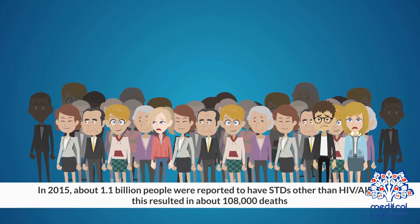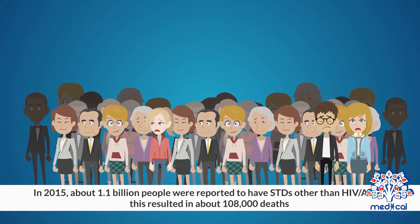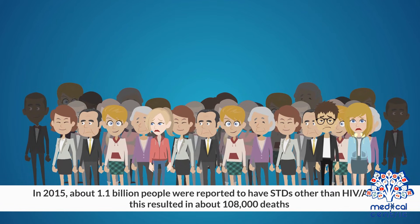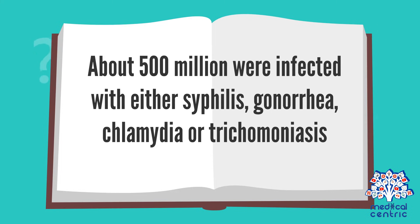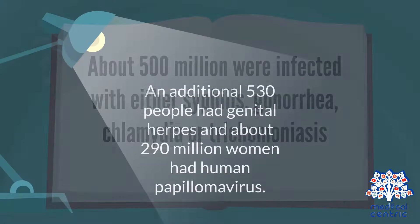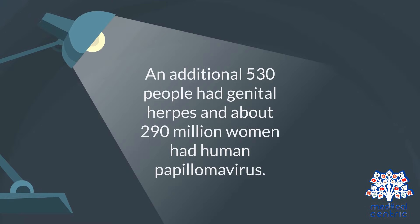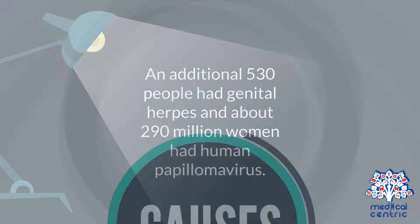In 2015, about 1.1 billion people were reported to have STDs. Other than HIV-AIDS, this resulted in about 108,000 deaths. About 500 million were infected with either syphilis, gonorrhea, chlamydia, or trichomoniasis. An additional 530 million had genital herpes, and about 290 million women had human papillomavirus.